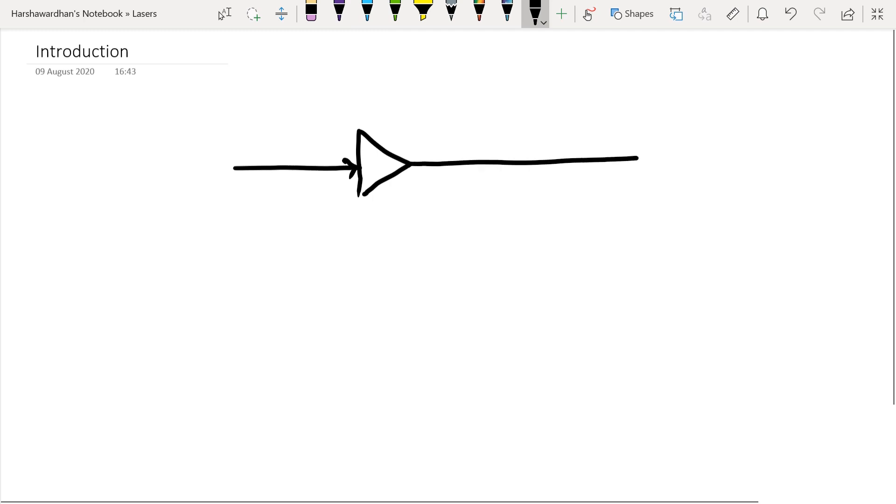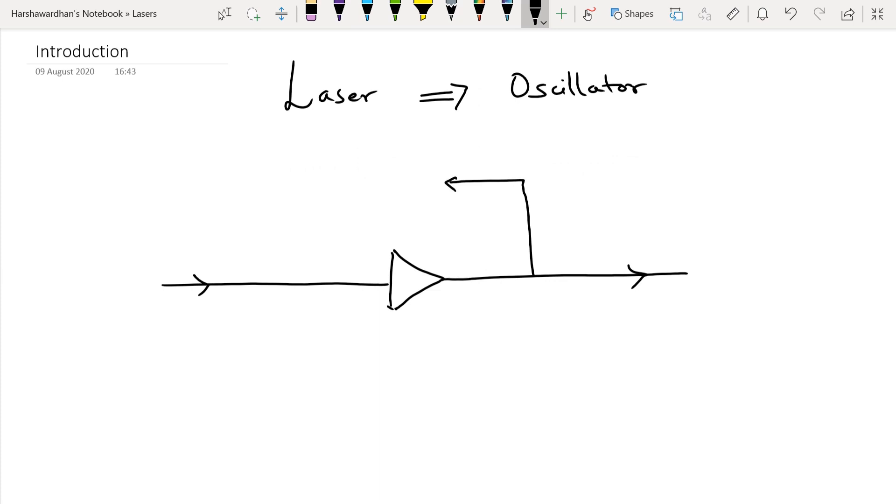The output of this amplifier is again fed back. This is a positive feedback loop. Let me call this explicitly the feedback.